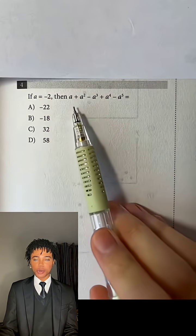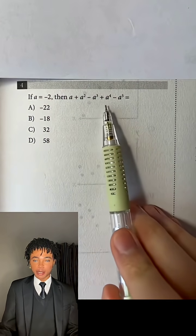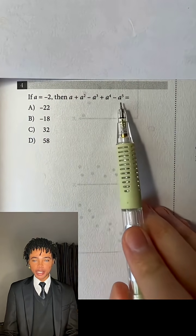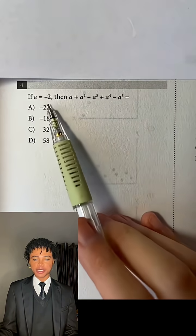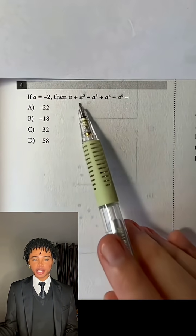If a equals negative 2, then a plus a squared minus a cubed plus a raised to the fourth power minus a raised to the fifth power equals what? Okay, so since we're given the value of a, which is negative 2, we can just plug in negative 2 for a in this expression.